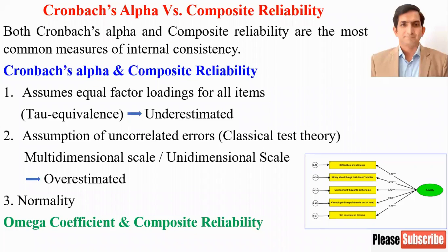In this video, I will explain the difference between Cronbach alpha and composite reliability. Both Cronbach alpha and composite reliability are the most common measures of internal consistency. However, there is a key difference between them.